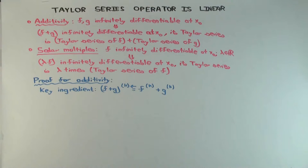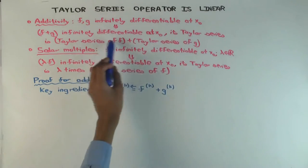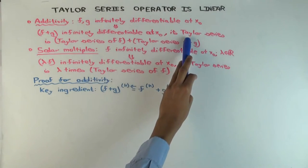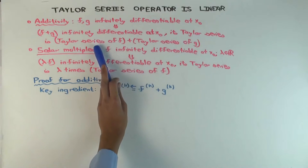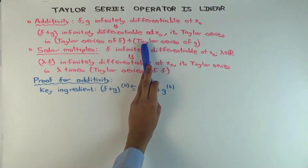So if f and g are both infinitely differentiable at a point, so you can take individually the Taylor series, then the sum is also infinitely differentiable at the point and the Taylor series of the sum at the point, so these are all at x0. The Taylor series of the sum at x0 is the Taylor series of f at x0 plus the Taylor series of g at x0.